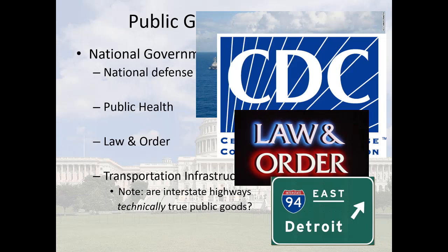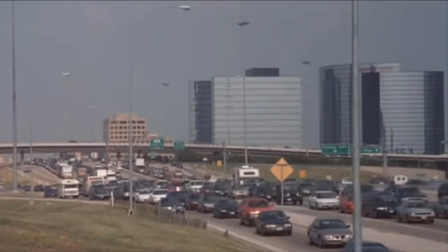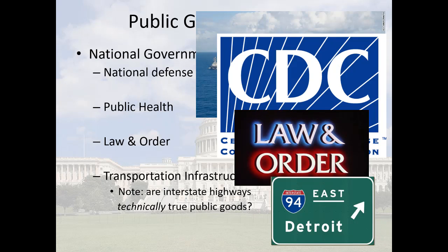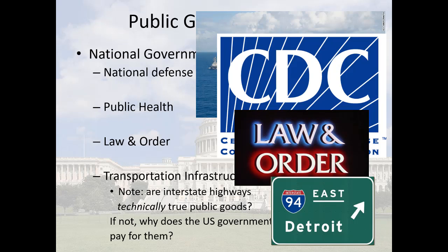Are interstate highways technically public goods? Well, no — they are excludable, as evidenced by toll roads, and they're also rival as evidenced by traffic jams. But we generally treat things like public roads as public goods — I sometimes call them quasi-public goods. You can think of public goods as a continuum: rivalness is a continuum, and excludability is also something of a continuum depending on how technically feasible it is to exclude non-payers. So some things are quasi-public goods, but we treat them as if they were full public goods, which is why the government pays for things like highways and airports.